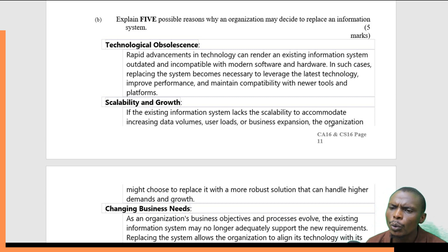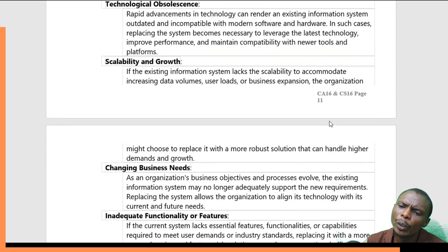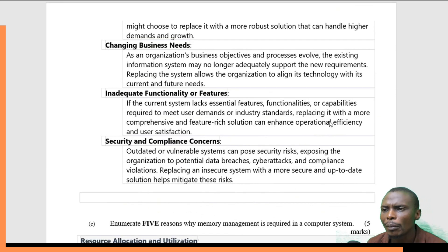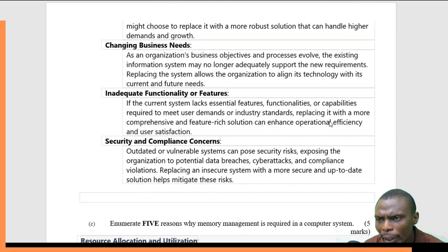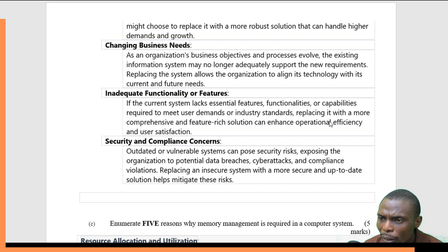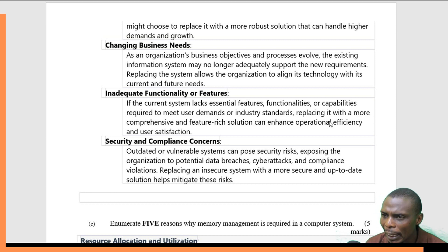The third reason is changing business needs. The organization's objectives may change or the business may have evolved, meaning the system no longer supports the new requirements. In this case, the organization can consider replacing the system and aligning its technology with the current needs.